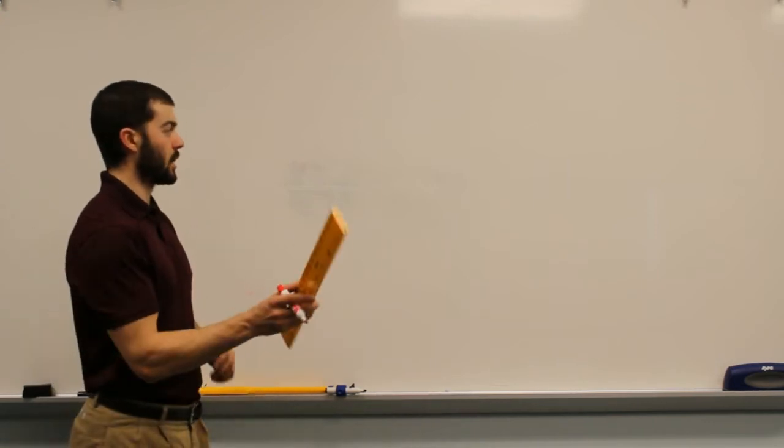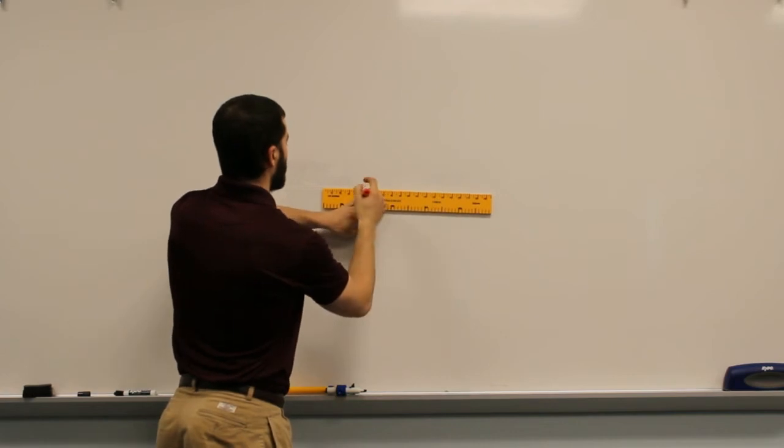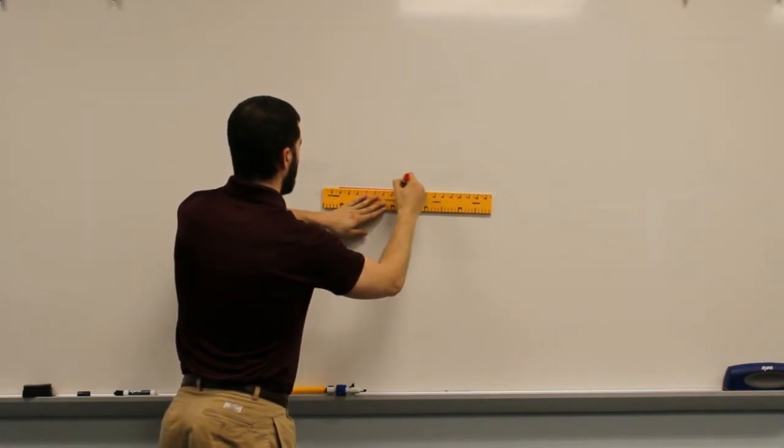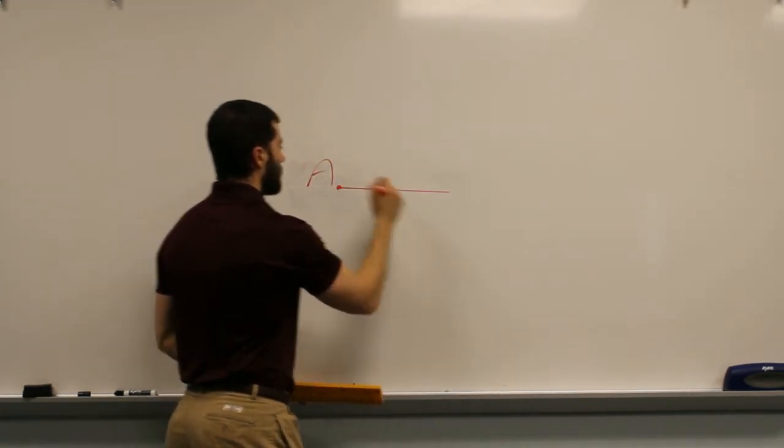So all we have to do for this is we need an original line segment that we're going to copy, so we can use a straightedge to give ourselves an original line segment. We could call this line segment AB.